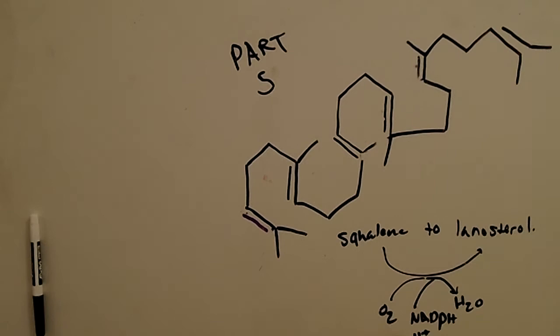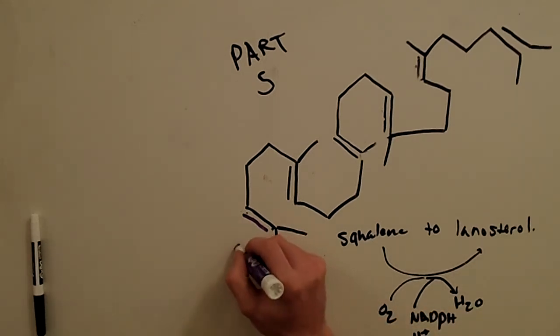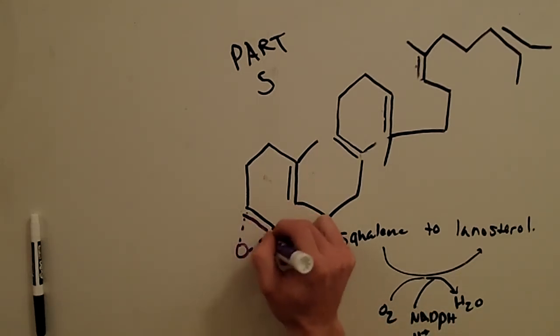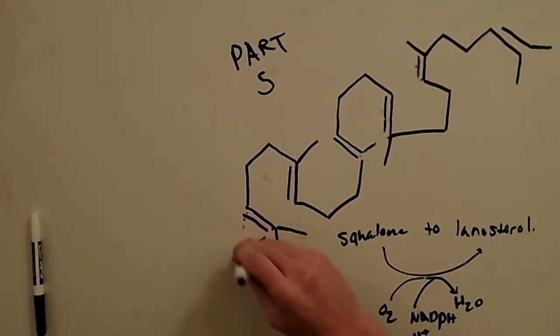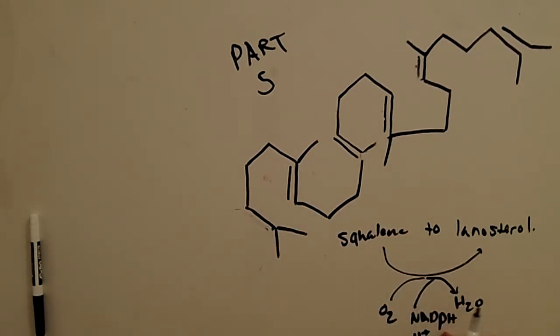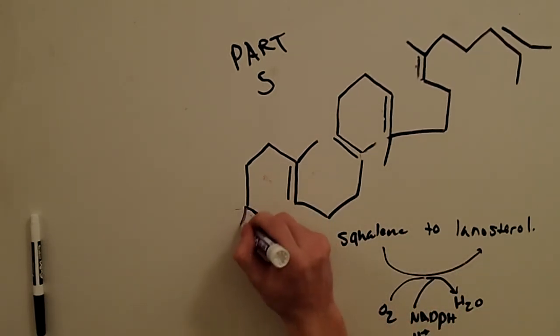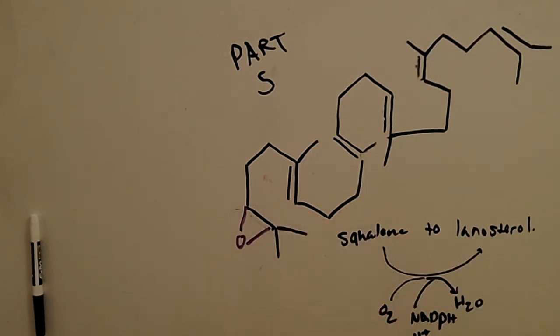What's going to happen is you're going to invest in oxygen with an NADPH and a proton. You're going to get out water. The oxygen is going to be interacting here and just come and form the epoxide ring. It's going to be facilitated with the NADPH. I'm just going to draw in that epoxide ring there.